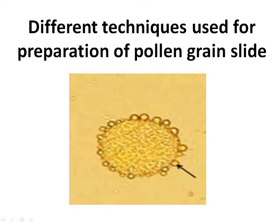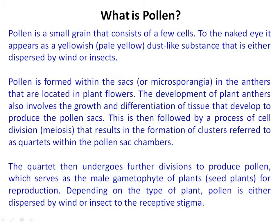The androecium is known as the male reproductive unit and gynoecium is known as the female reproductive unit. The androecium, that is the male reproductive organ of a flower, consists of three components: number one is filament, number two is anther, and number three is connective. The pollen grains are present inside the anther lobes of the stamen.